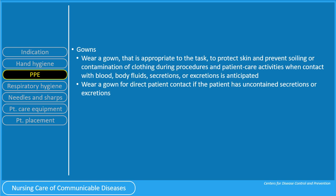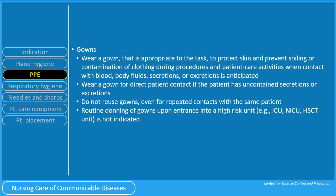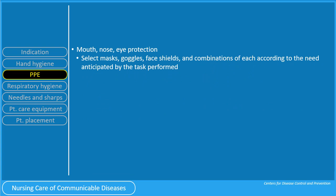Wear a gown for direct patient contact if the patient has uncontained secretions or excretions. Do not reuse gowns even for repeated contacts with the same patient. Routine donning of gowns upon entrance into a high-risk unit such as the ICU or the NICU is not indicated. For mouth, nose, and eye protection, select masks, goggles, face shields, and combinations of each according to the need anticipated by the task performed.